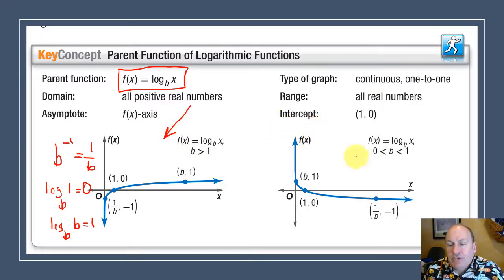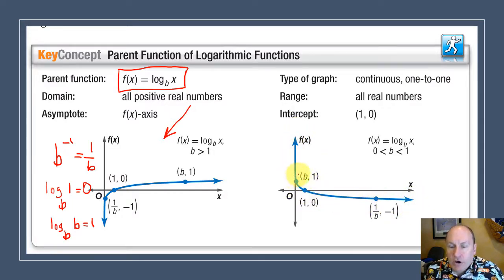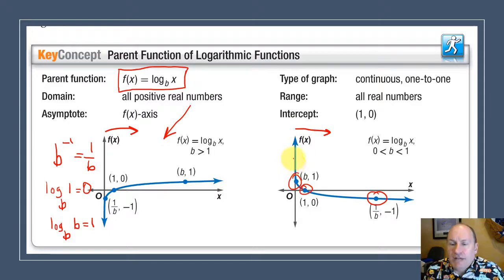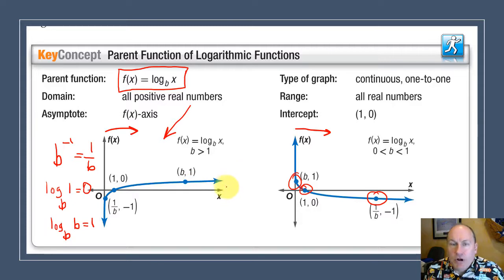In the second case where b is between 0 and 1 — analogous to exponential decay — the logarithmic function is constantly decreasing. The same three critical points apply: b comma 1, 1 comma 0, and 1/b comma negative 1, just in a different order. Important notes for all logarithmic parent functions: x values must always be positive, since no positive number raised to any power gives a negative. The range, however, can be all real numbers. These are the inverses of exponential growth and decay functions.